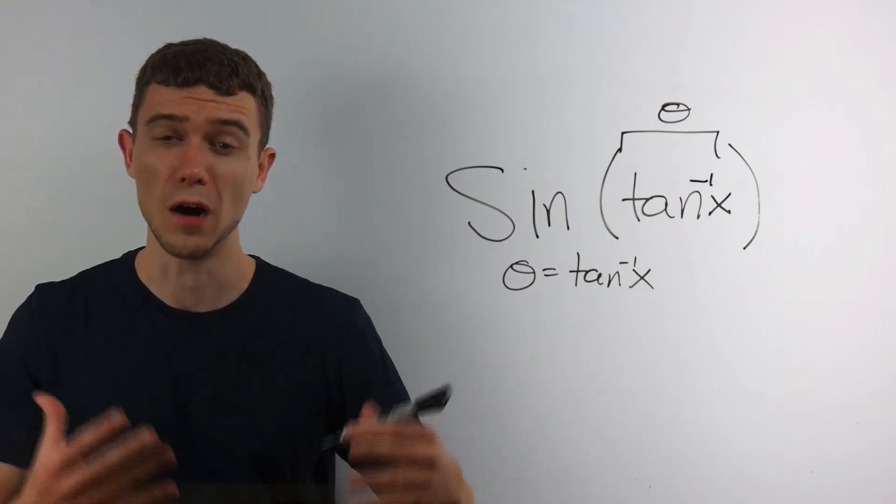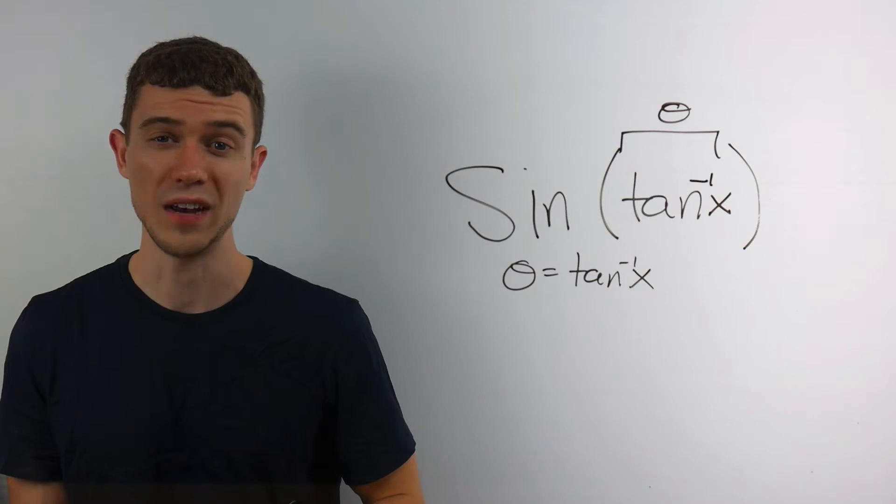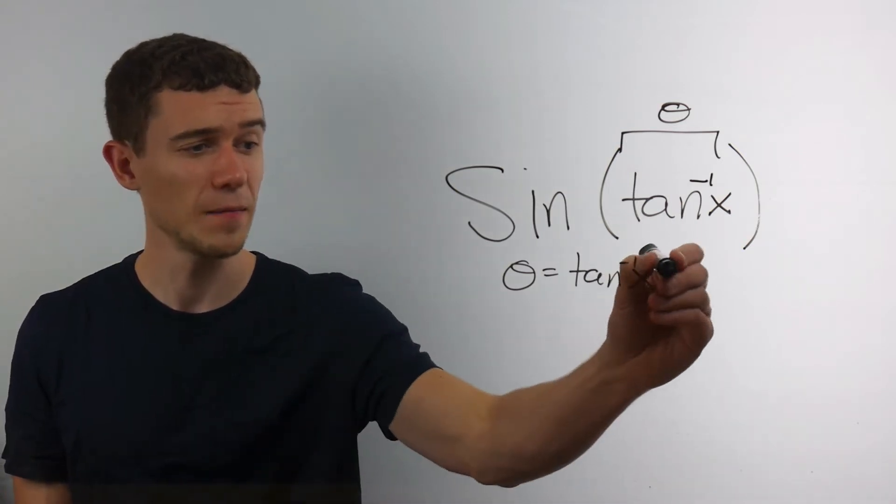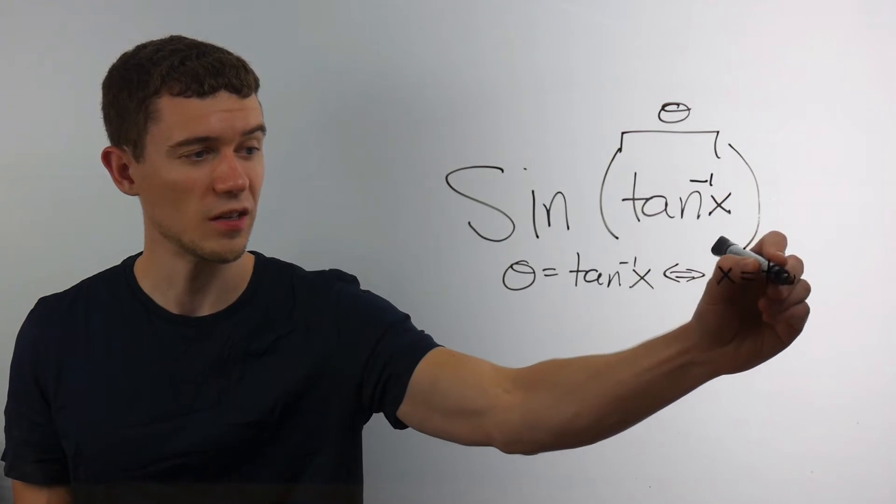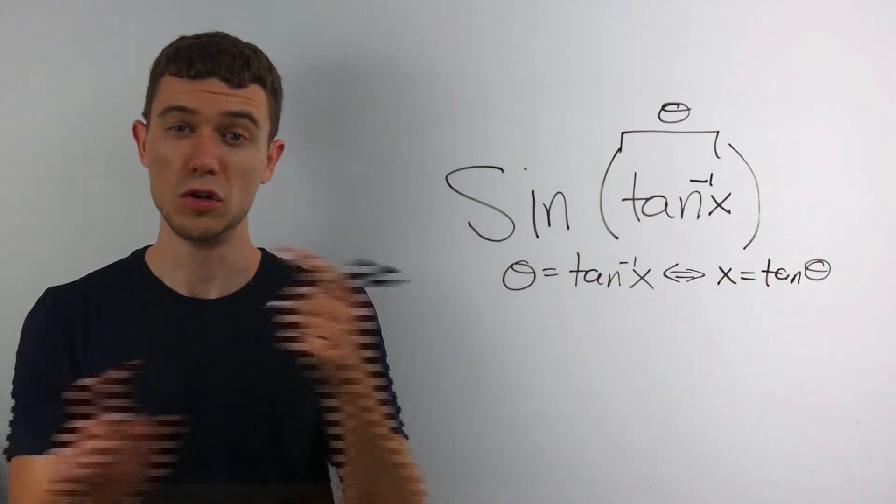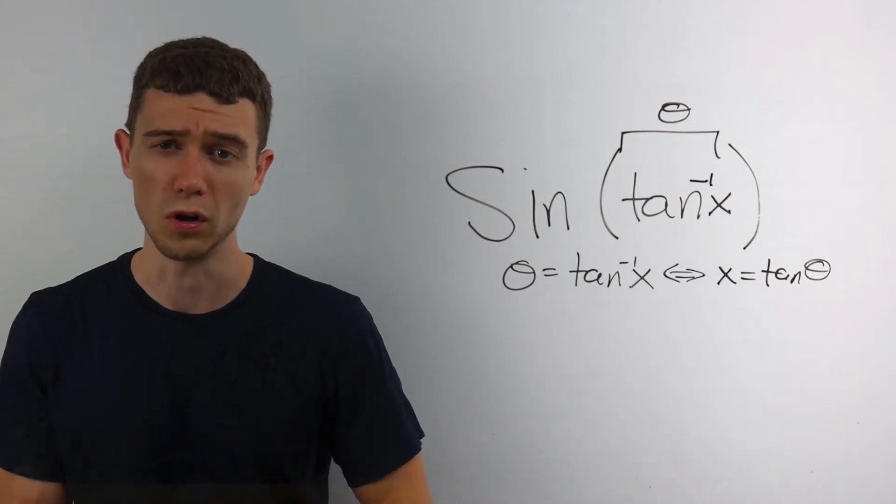Now by definition of these inverse functions, theta equals tan inverse of x. This means the same thing as x equals tangent theta. I sort of just do the flip. I reverse those things. That's how these inverse functions work.